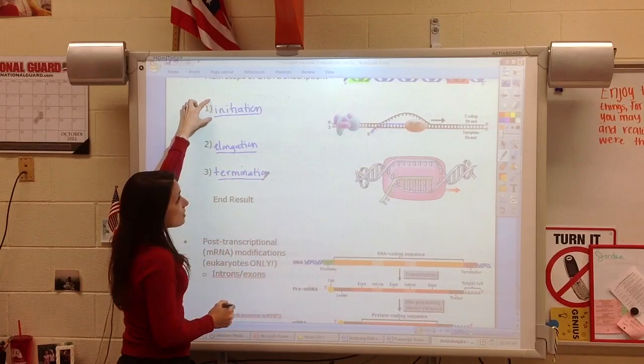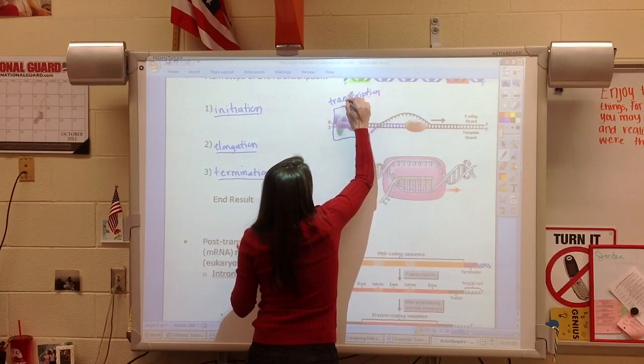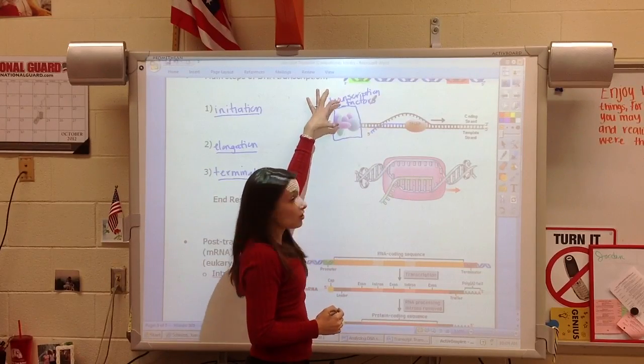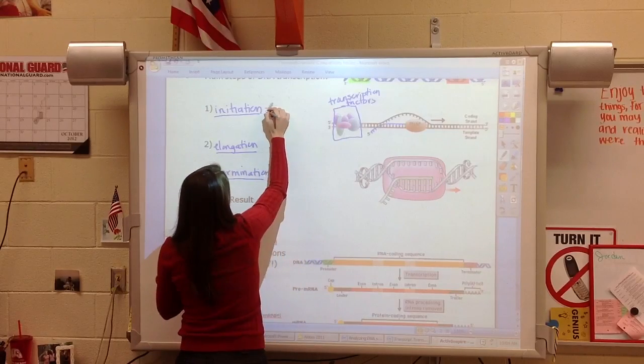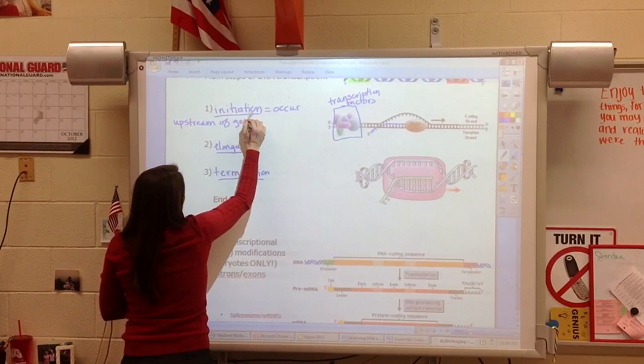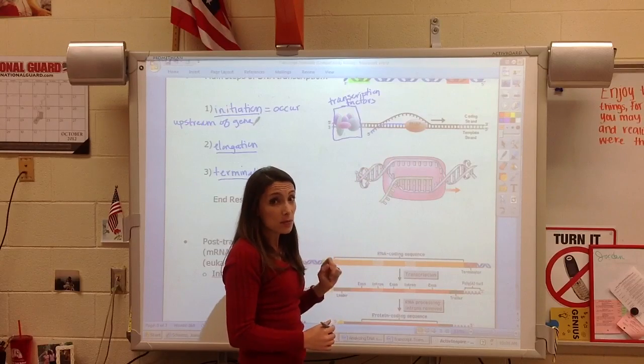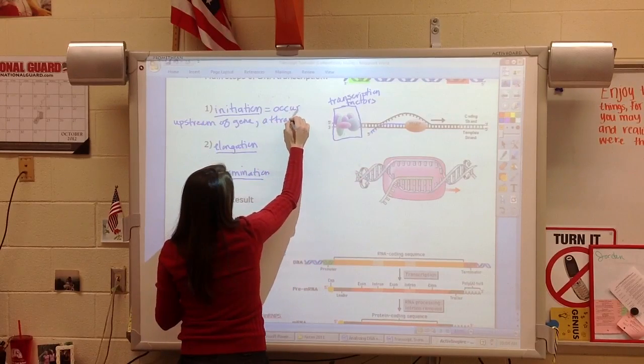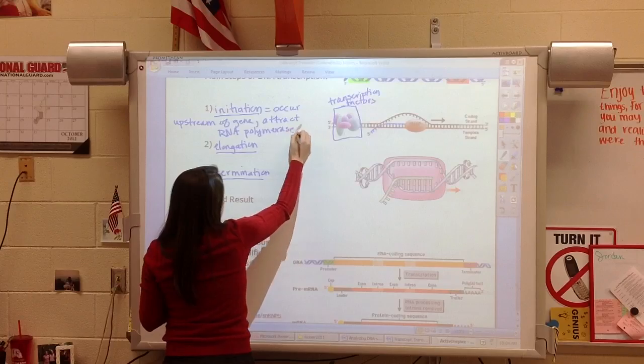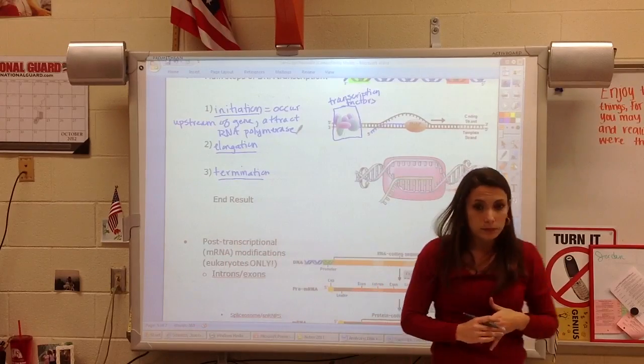Important points here is that the initiation is going to require what are called transcription factors. And these transcription factors are going to assemble at an initiator area. And this initiator area is going to occur upstream of the gene. So upstream of the gene we're going to see transcription factors assemble. And this tells the enzyme RNA polymerase where to attract or where to come to. So it attracts RNA polymerase versus DNA polymerase. And so initiation is going to be when the enzyme binds and actually begins creating the mRNA sequence.